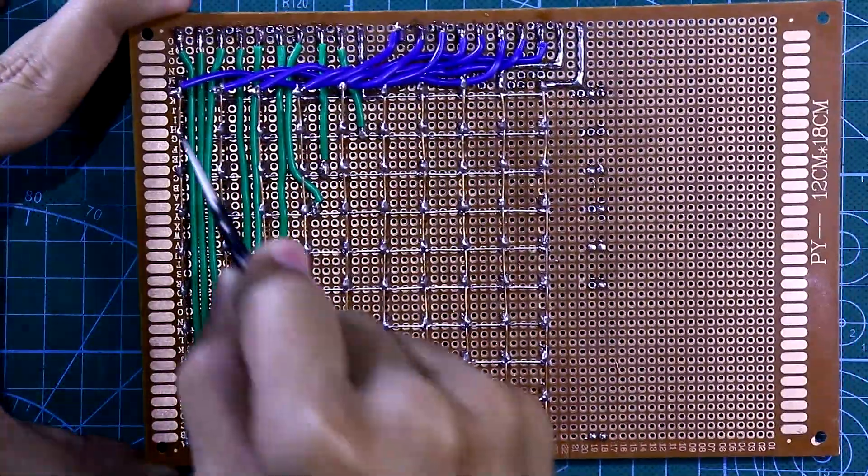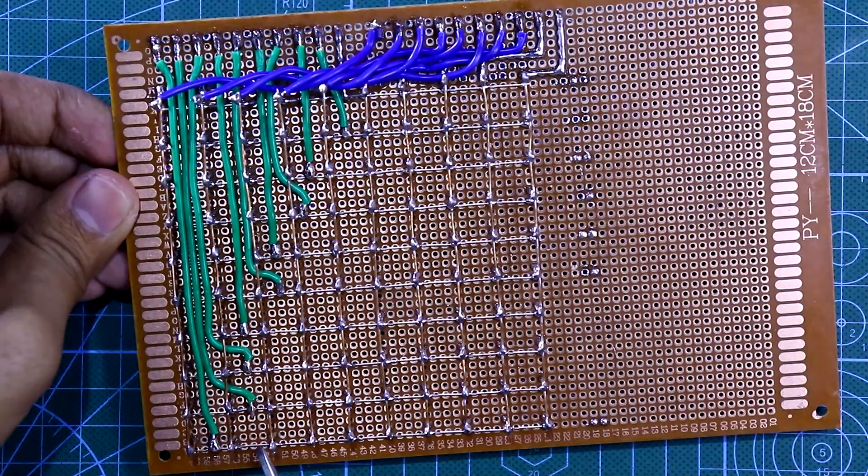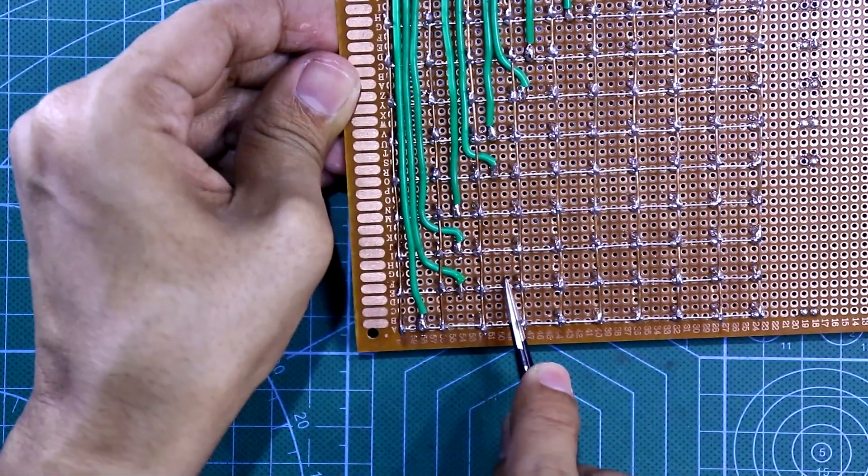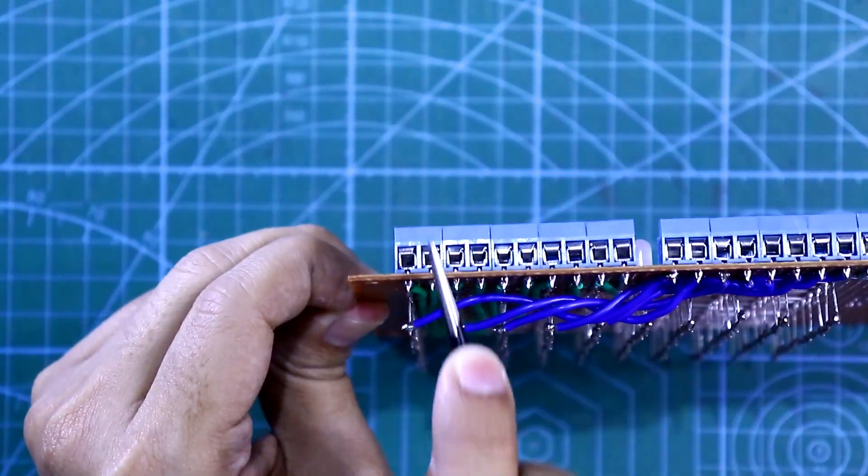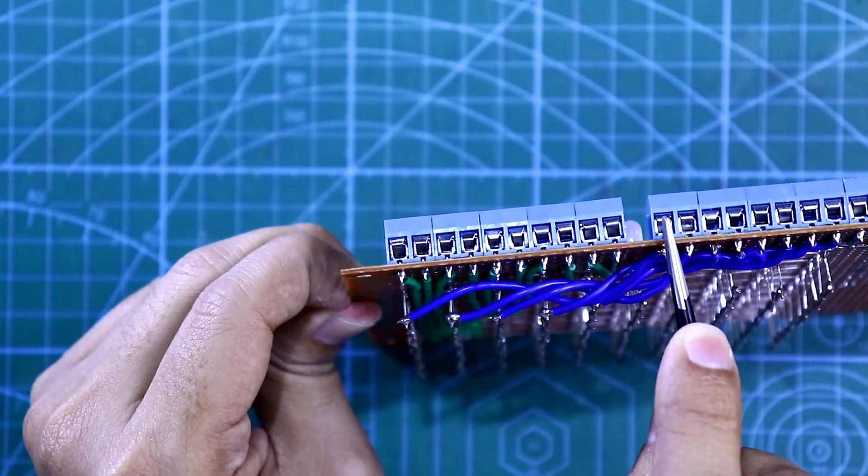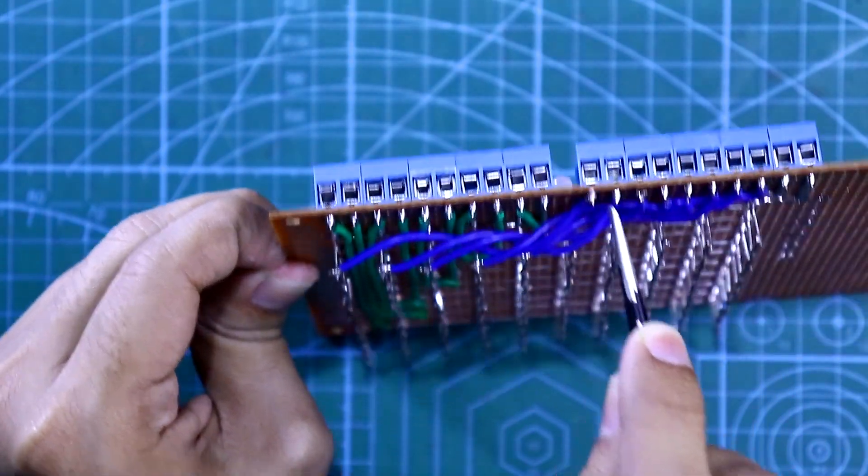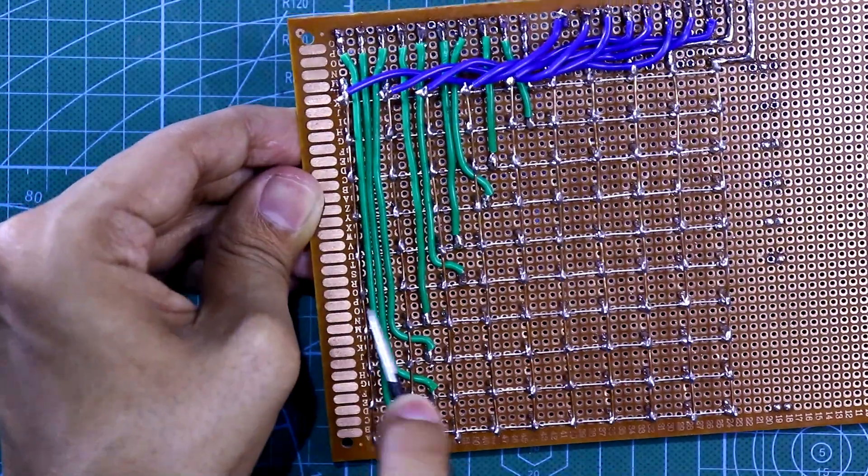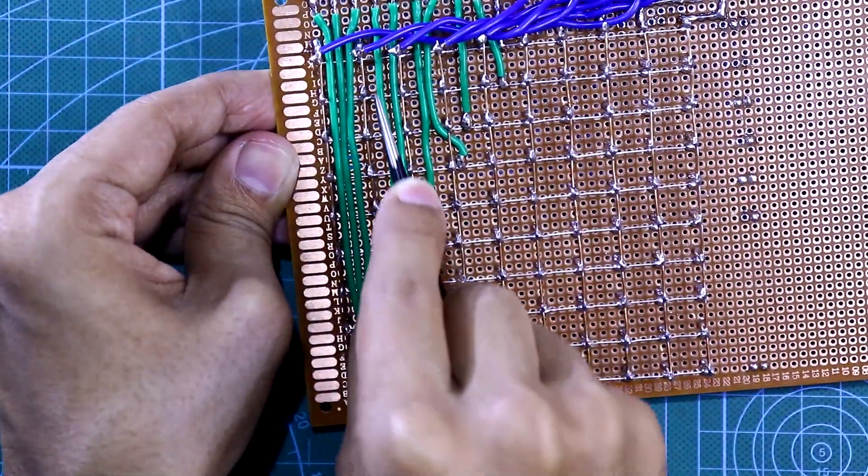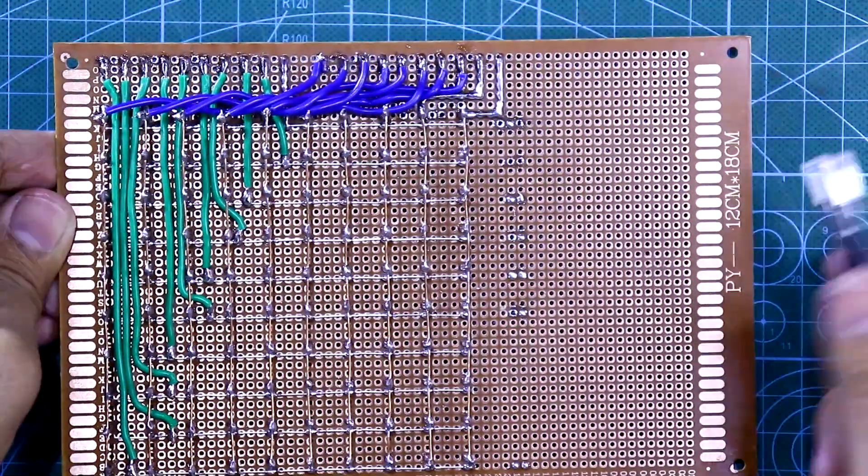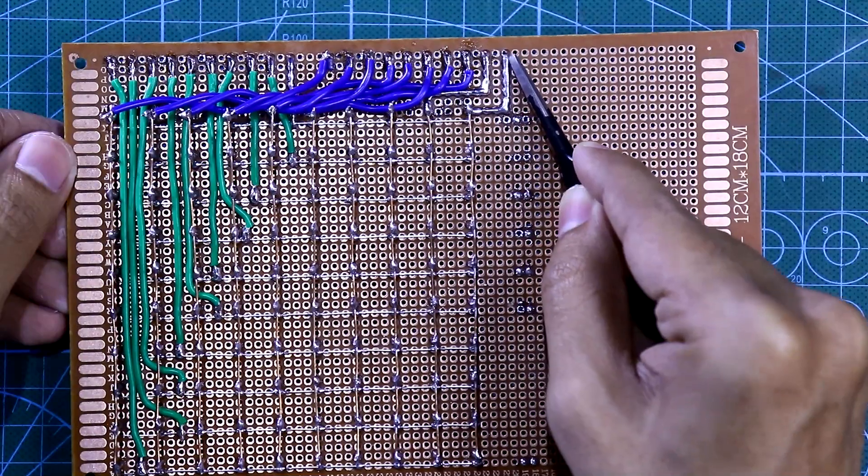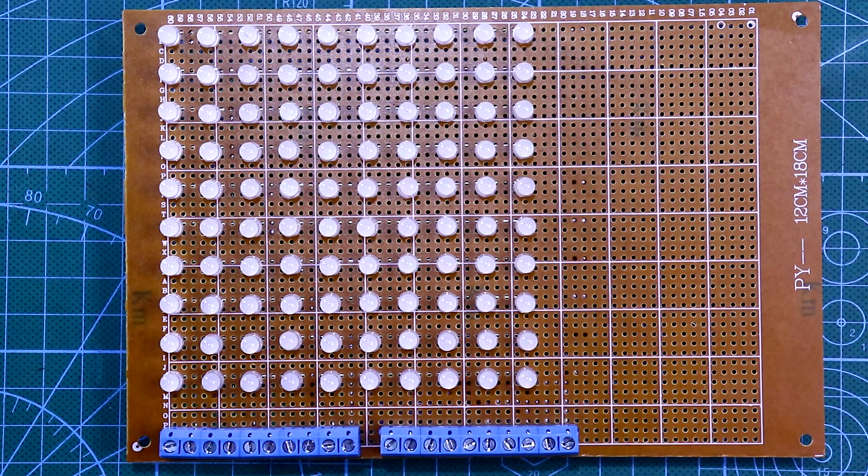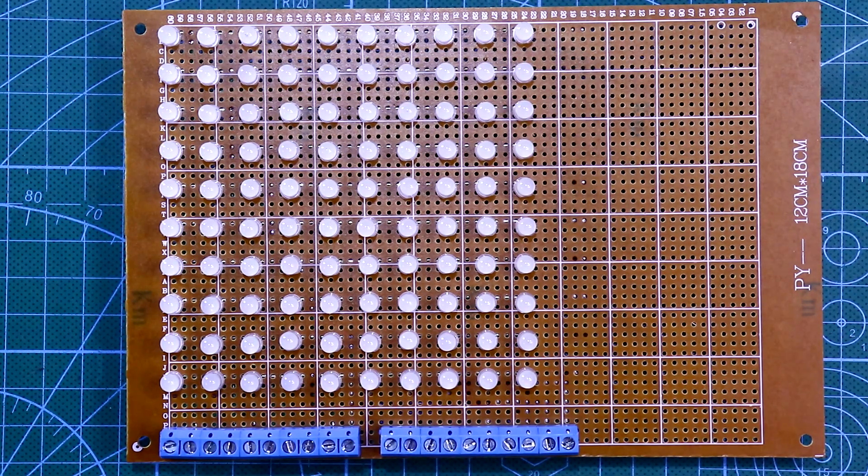First positive will go to first connector, second row will go to second connector. First connector from this side will go to first column, second connector will go to second column, and likewise. This is the last connection connected to the last column. Rows are connected as positive and columns are connected as negative.